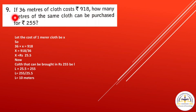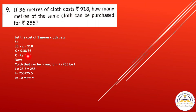Question 9: If 36 meters of cloth costs rupees 918, how many meters can be purchased for rupees 255? Let the cost per meter be x. So 36 times x equals 918, giving x equals 918 divided by 36 equals 25.5 rupees per meter. For rupees 255: 255 divided by 25.5 equals 10 meters.